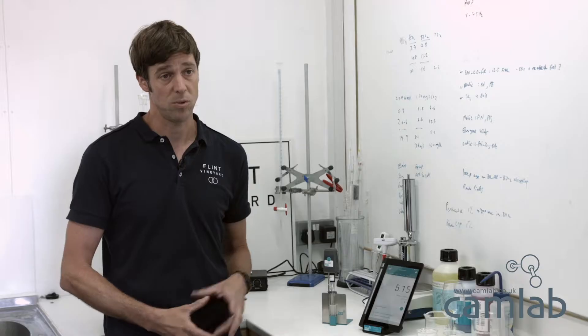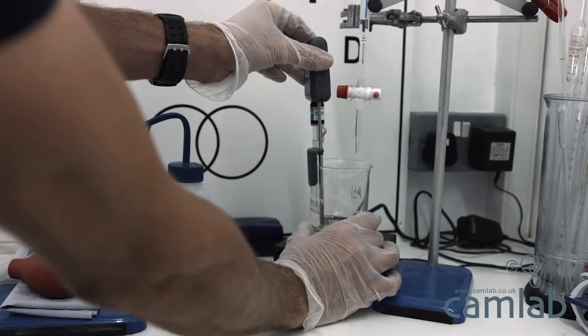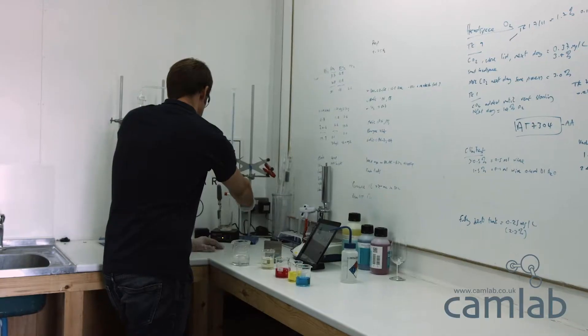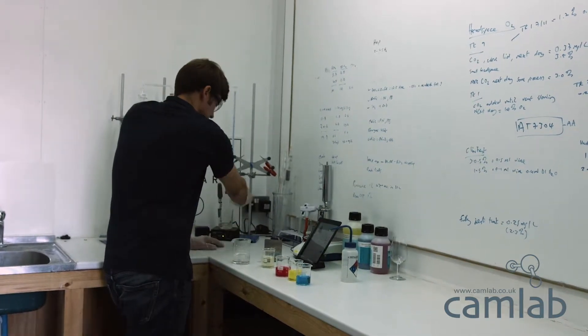As well as affecting taste it also affects the stability of the wine. Throughout the whole winemaking process, not just at the beginning, we're measuring pH. It can affect the efficiency of sulfites, and sulfites are an addition we make to wine in order to stabilize the wine from oxidation.